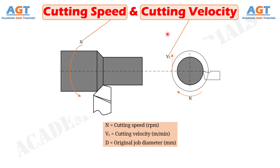Cutting speed is basically the rotational speed of either the workpiece or cutting tool, whichever is rotating, based on the machining operation. Cutting speed is measured in revolutions per minute and usually designated by the letter N.